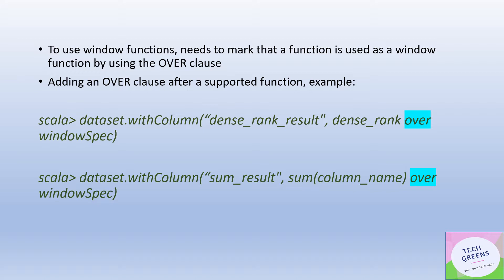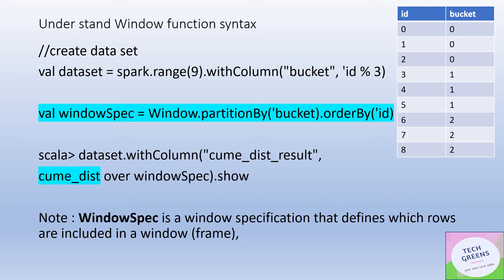Now let's understand the syntax. Suppose we create a dataset with two columns — id and bucket. We then create a window spec. A window spec, short for window specification, is the group of rows on which we apply any window operation. There are two main ways to create a window spec: one is partition by and the second is order by. Partition by decides which rows belong to which partition or group, and order by defines the positioning of rows within that particular group.